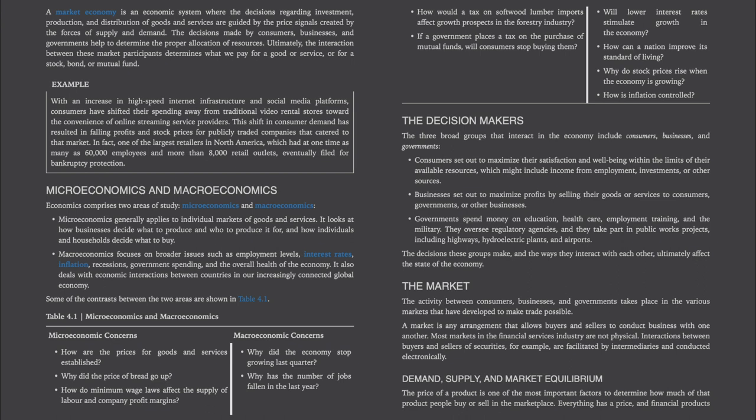Economics comprises two areas of study: microeconomics and macroeconomics. Micro generally applies to individual markets of goods and services. It looks at how businesses decide what to produce and what to produce it for, and how individuals and households decide what to buy. Macroeconomics focuses on broader issues such as employment levels, interest rates, inflation, recessions, government spending, and the overall health of the economy.